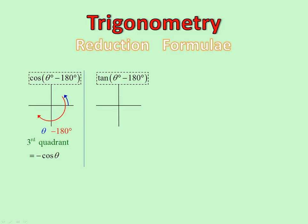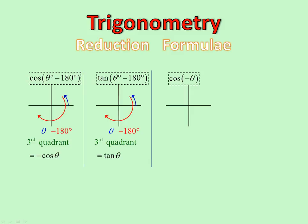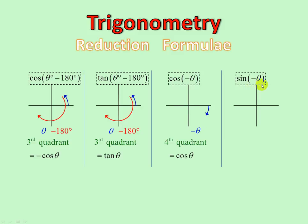Tan of theta minus 180: same angle, third quadrant, and tan of a third quadrant angle is positive. Cos of negative theta: we start at 0, we go negative, which means we go clockwise, and we're nudged into the fourth quadrant. Cos of a fourth quadrant angle is positive, so it's just cos theta. Sin of negative theta: nudge into the fourth quadrant, and sin in the fourth quadrant is negative. So negative sin theta.